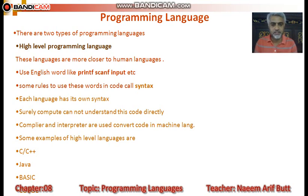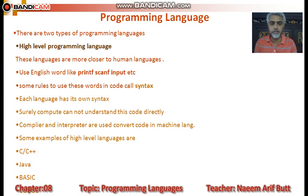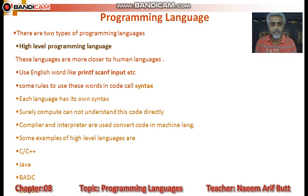Surely the computer cannot understand this code directly. یہ بات آپ کے ذہن میں آ چکی ہے کہ جب بھی ہم high-level languages کو use کریں گے تو computer directly اس کو understand نہیں کرے گا — ہمیں translator یا language processors کو use کرنا پڑے گا، اور execution time بڑھے گا۔ Compiler and interpreter are used to convert code into machine language — یہ دو طرح کے language translators ہیں۔